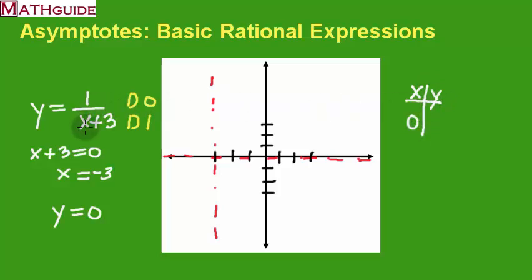So if you go back to the original problem, put a 0 here, you can see the denominator is 0 plus 3. That's 3. So the whole thing turns out to be 1 third for y. y turns out to be a 1 third.